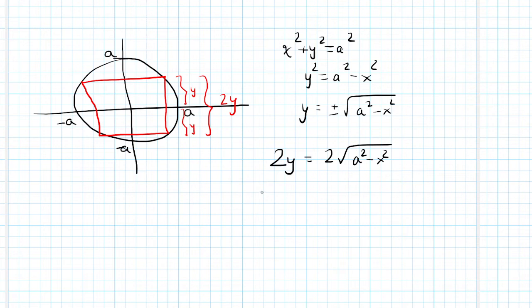So now when we're looking at the area of the square, area of the square is side squared. Which in this case because we know the height, we also know the base. They're the same. It's 2y quantity squared which is 4 times quantity A squared minus x squared. Or if you want, 4a squared minus 4x squared.